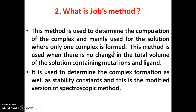Job's method is used when there is no change in the total volume of the solution containing metal ions and ligand. It is used to determine complex formation as well as stability constants, and it is the modified version of the spectroscopic method. The total volume remains constant. By using Job's method, we can find the composition of the complex, the stability constants, and also the ΔG° values.